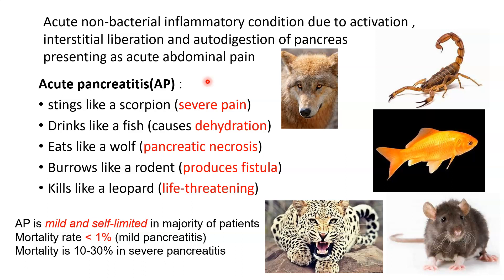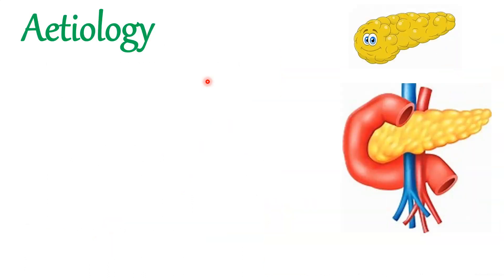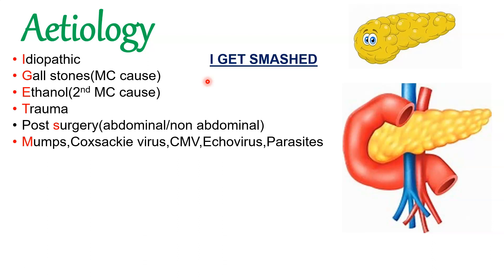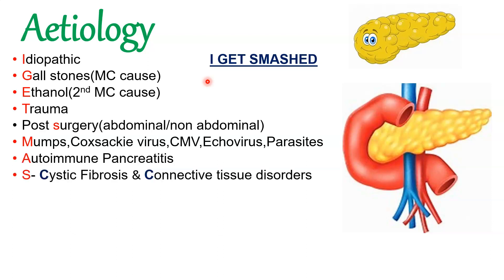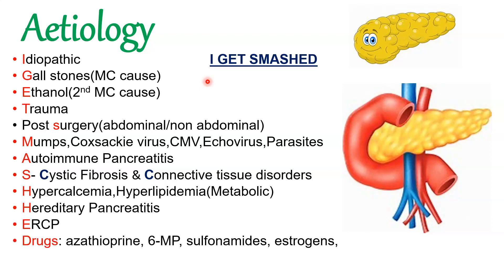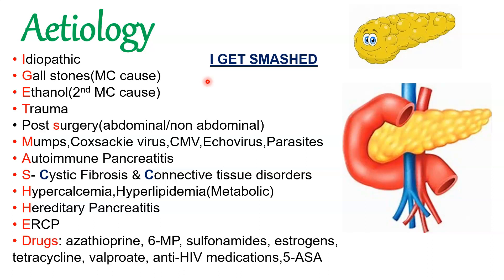The mortality goes over 10 to 30% in severe pancreatitis. The causes can be simply remembered by the mnemonic I GET SMASHED. The most common cause is gallstones, followed by alcohol intake. Other causes include trauma, post-surgery, infections like mumps, coxsackie virus, cytomegalovirus, or parasitic infections, autoimmune pancreatitis, cystic fibrosis, connective tissue disorders, metabolic diseases like hypercalcemia and hyperlipidemia, hereditary pancreatitis, post-ERCP, and drugs like azathioprine, 6-MP, sulfonamides, estrogens, 5-ASA, and anti-HIV medications.